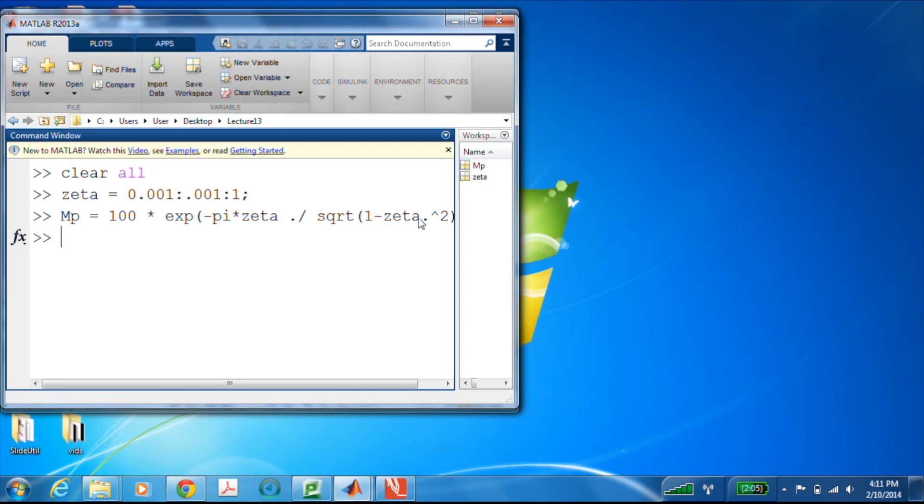And notice I used the dot divide because I'm dividing an array by another array. And here I had to use the dot squared because, again, I just wanted to compute the element by element square of that array zeta.